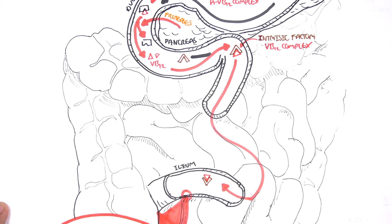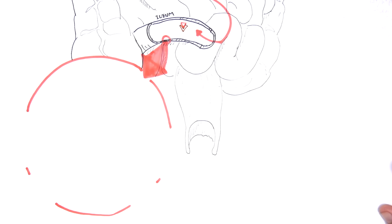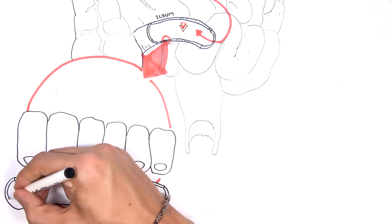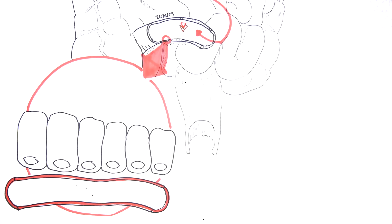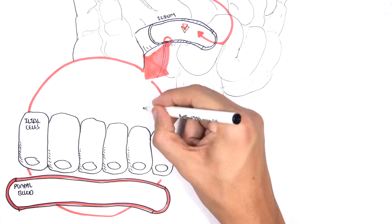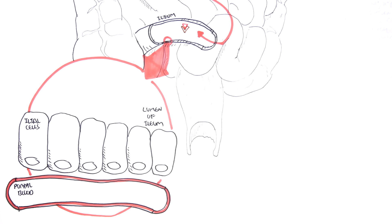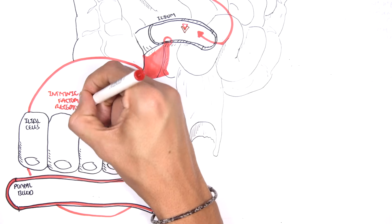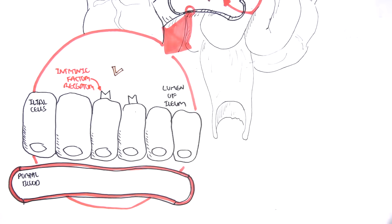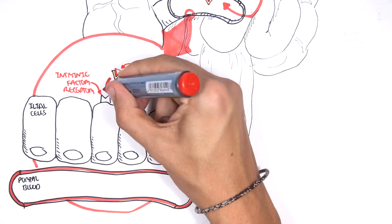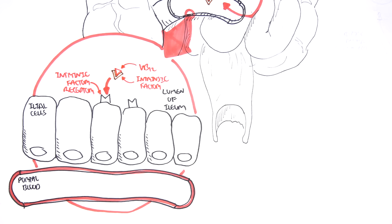So here, if we zoom into this section, we can see that there's ileal cells. And on the basal side of these cells, of these columnar ileal cells, is the portal vein, which will return blood to the liver. It's on the apical surface of these cells where we find intrinsic factor receptors. So when the intrinsic factor carrying the vitamin B12 comes along, it will bind onto the intrinsic factor receptor, and then this whole thing will get endocytosed.